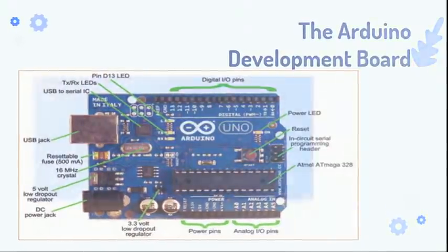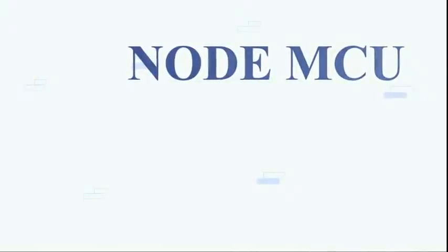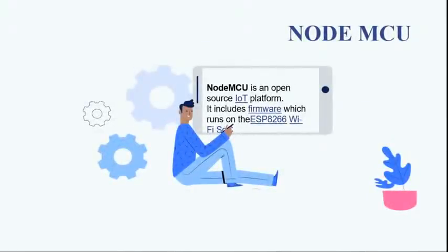The next one is NodeMCU. NodeMCU is like Arduino, but it's an open source IoT framework — a prototyping board. The working of NodeMCU is based on GPIO — General Purpose Input and Output. Based on pin mapping, you can get an output. When comparing to Arduino, some configurations are lower, but it is mainly used for GPIO. This is all about NodeMCU.